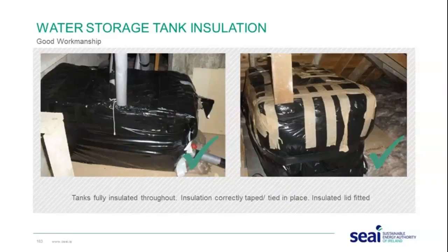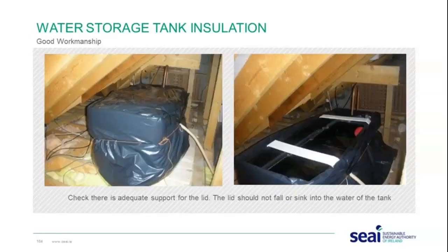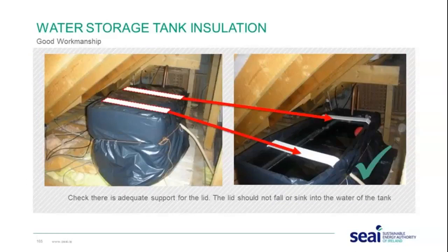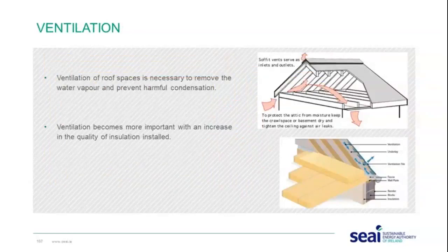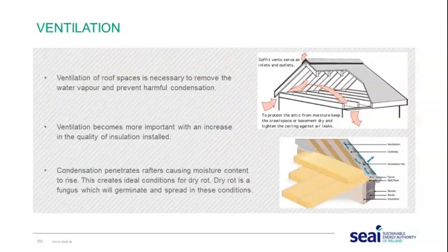Poor workmanship examples show tank insulation not held in place and no lid fitted. Good workmanship means tanks are fully insulated throughout, insulation is correctly taped and tied in place, and insulation lids are fitted. A good installation example shows the contractor installing supports for the lid to prevent the insulation from weighing down on the ball valve — correct supports for the lid can prevent a callback to fix a ball valve overflowing.